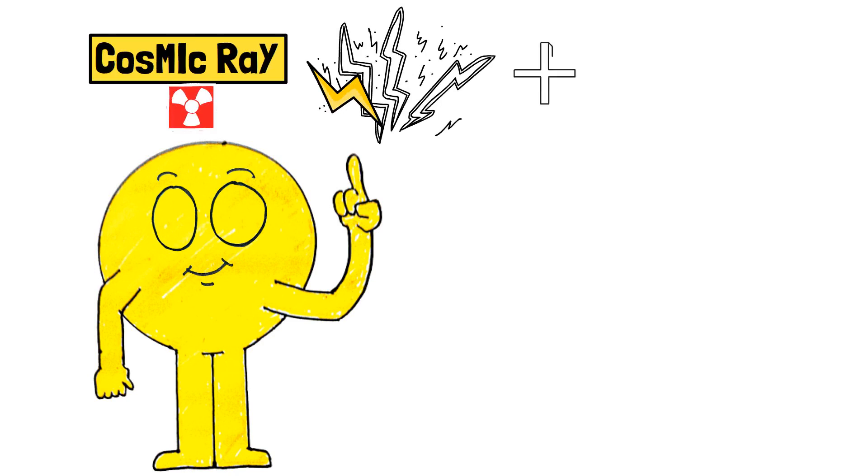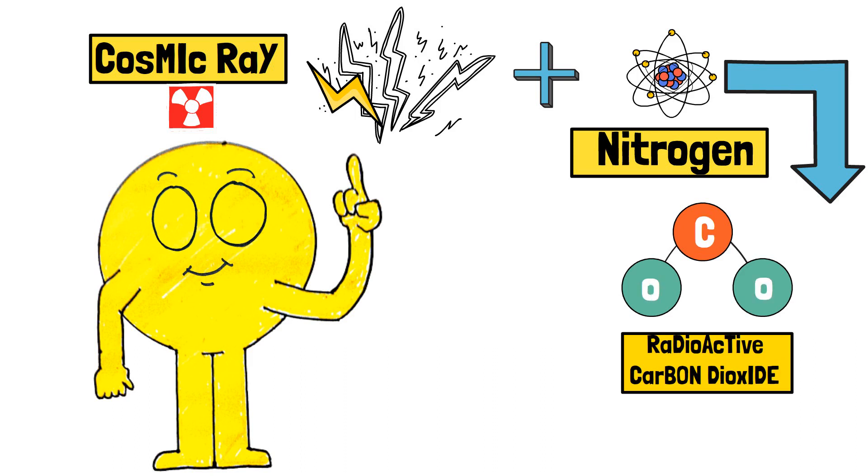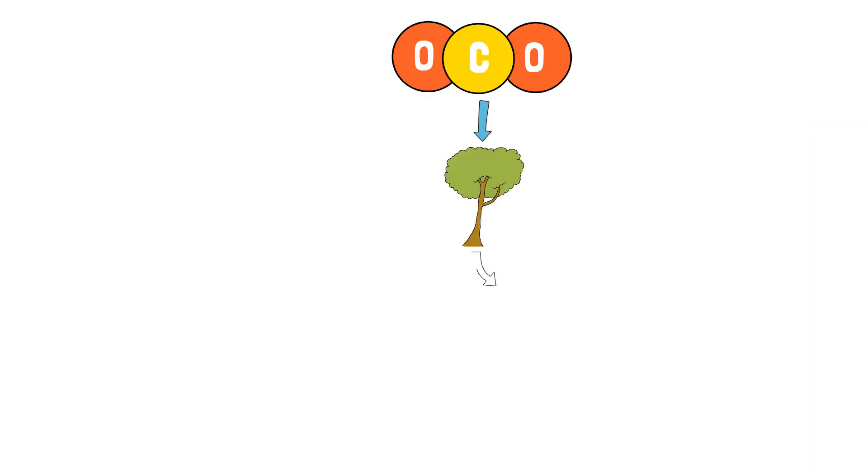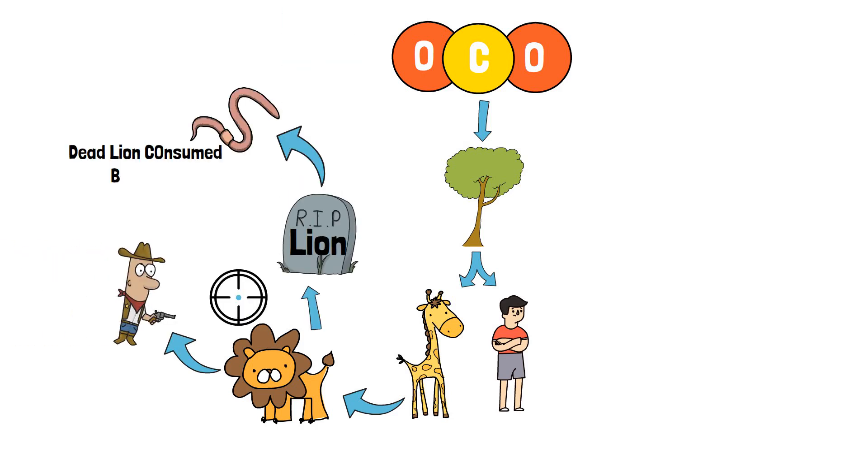The produced radioactive carbon then combines with the oxygen and produces radioactive carbon dioxide, which is consumed by plants during the process of photosynthesis. And then different parts of plants are consumed by different animals, and these animals are consumed by other animals, as depicted in food chain.